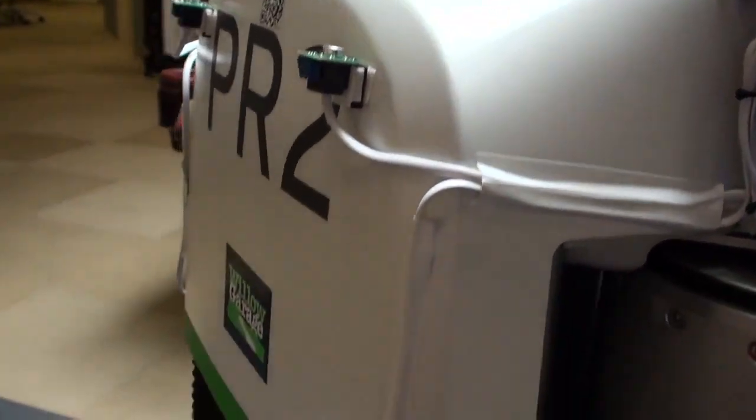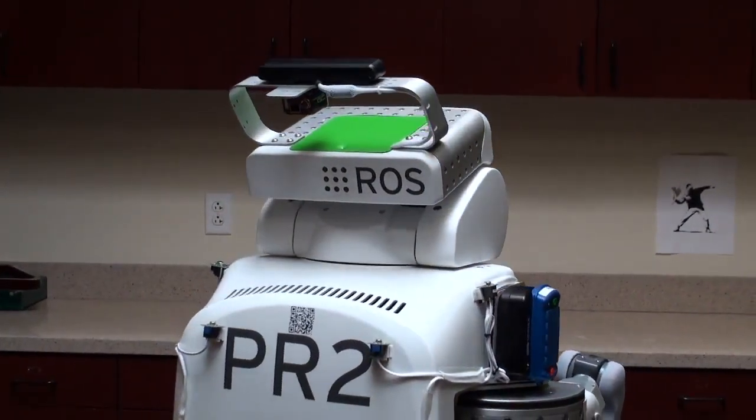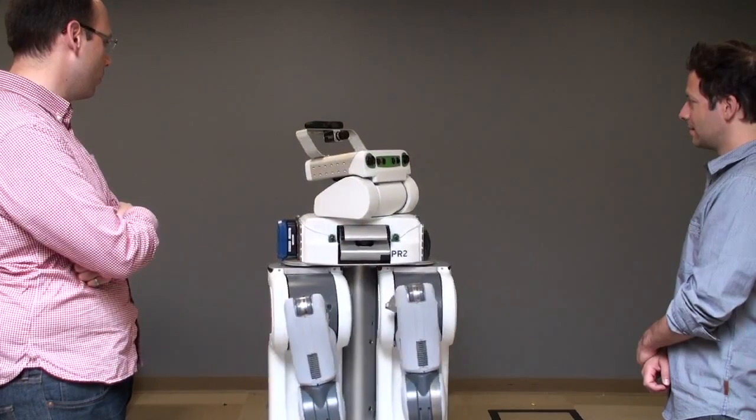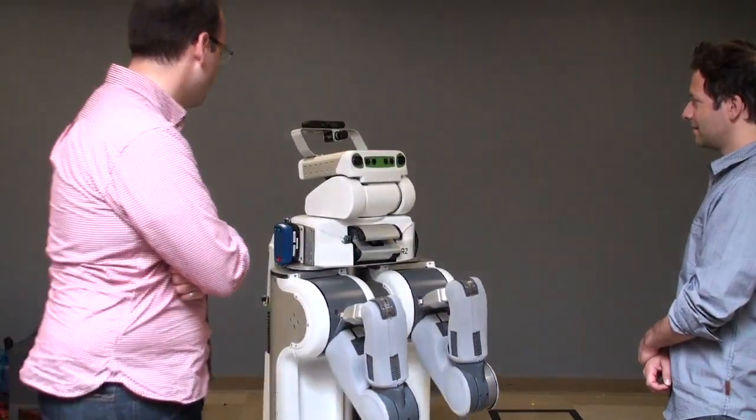The microphones are installed on the upper part of the PR2's torso and record everything that surrounds it. The software part, the algorithm named ManyEars, can locate and track the orientation of up to four sound sources simultaneously. This is used here to orient the PR2 toward the person who is talking.